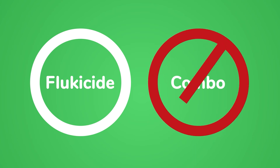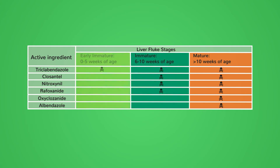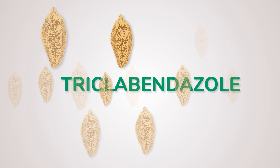Different active ingredients have different efficacy levels against the various stages of liver fluke. Some flukicides only kill adult liver fluke. Some kill both adult and immature fluke. And one active, triclobendazole, kills all three stages: early immature, immature, and adult fluke. However, some populations of liver fluke have already developed resistance to triclobendazole.